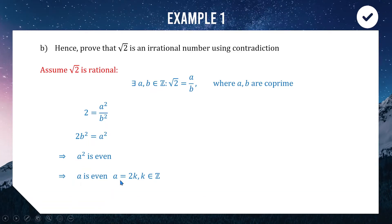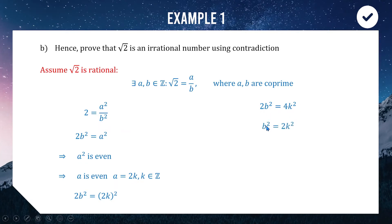Since a is even, we write a = 2k. Substituting into 2b² = a² gives 2b² = (2k)² = 4k², so dividing by 2: b² = 2k². This tells us b² = 2 × something, so b² is even, which implies b is also even.